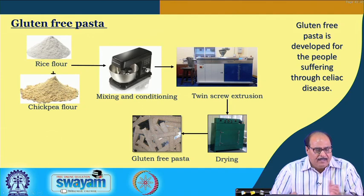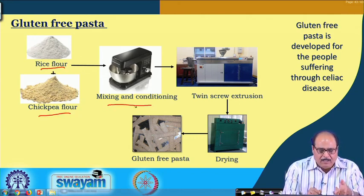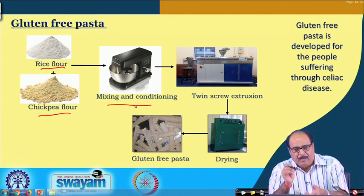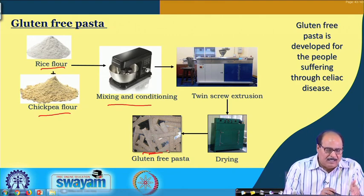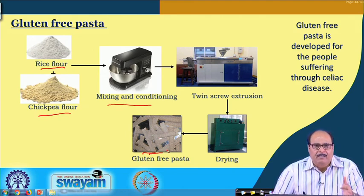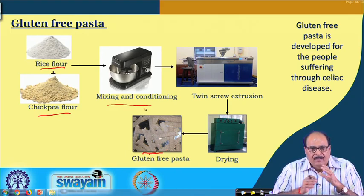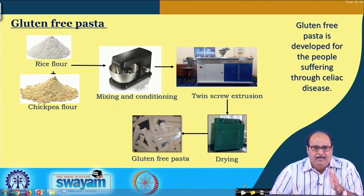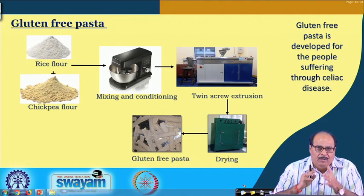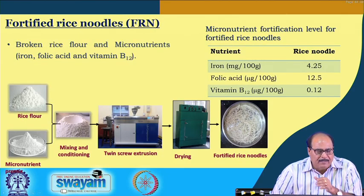Another product is gluten-free pasta. Chickpea flour and rice flour are mixed together, a batter is formed, conditioned, and fed to the cold extruder, then dried to get gluten-free pasta. The extrusion process conditions, particularly mixing and conditioning, are optimized so that the pasta retains its shape and swells to double its size when cooked, achieving desired pasta characteristics. The other product is a fortified rice noodle.